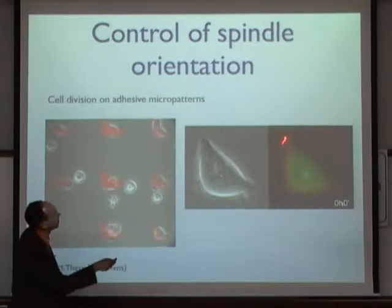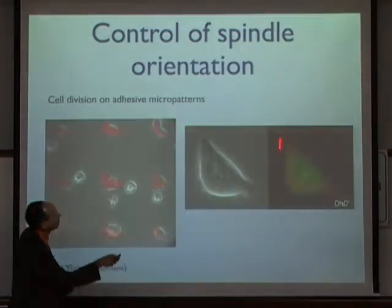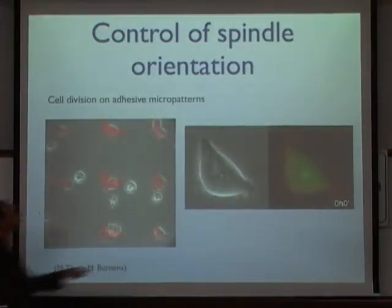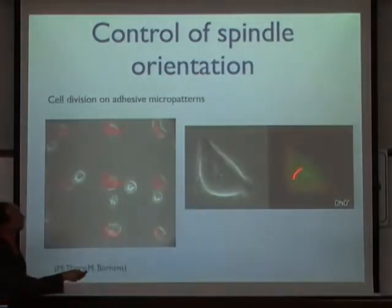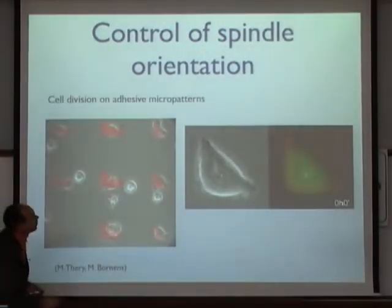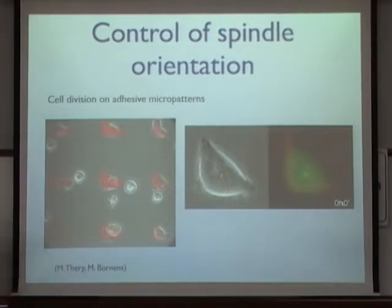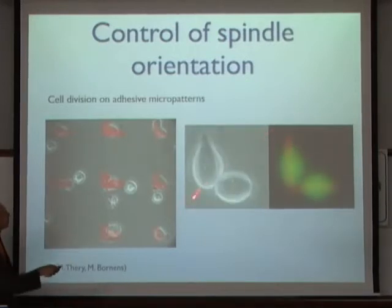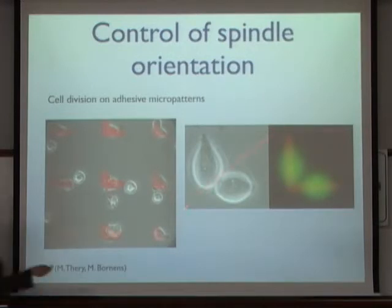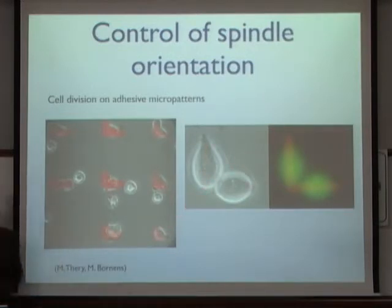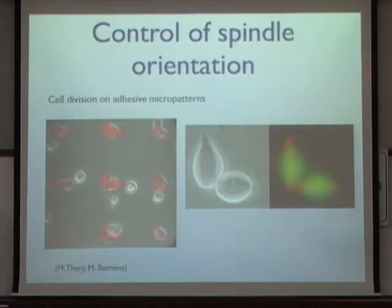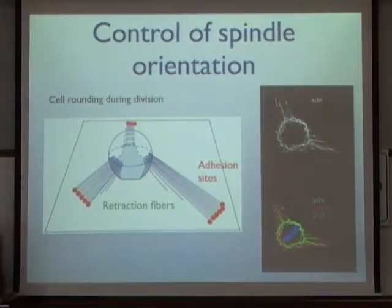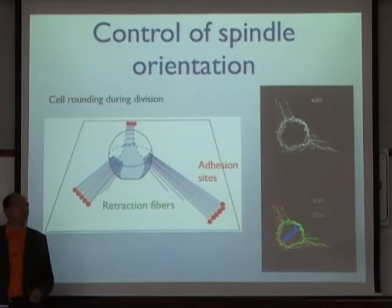In one such experiment, the red outline shows an L-shaped adhesive pattern. A fluorescent marker shows the centrioles, and one can see the full cell. The initial cell sits on this pattern, rounds up to divide, and one can already see that the cell division axis is symmetric with respect to this pattern shape. The question is how the spindle turns into the right orientation using clues from the adhesive environment.